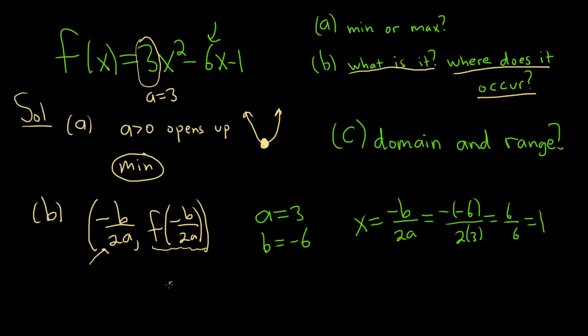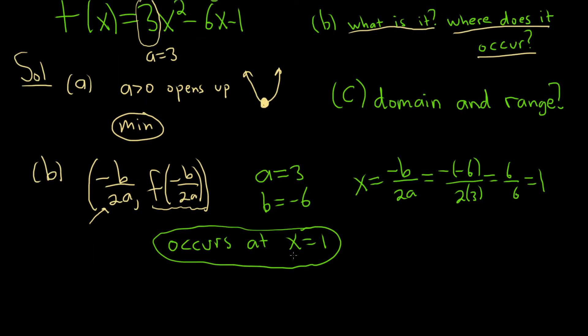So that's where it occurs. It occurs at x equals 1. That answers the second question. Where does it occur? And what is it? Well, it's the y value at 1.